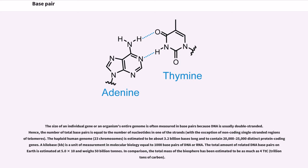A kilobase (Kb) is a unit of measurement in molecular biology equal to 1,000 base pairs of DNA or RNA. The total amount of related DNA base pairs on Earth is estimated at 5.0 × 10^37 and weighs 50 billion tons. In comparison, the total mass of the biosphere has been estimated to be as much as 4 trillion tons of carbon.